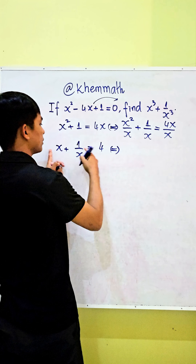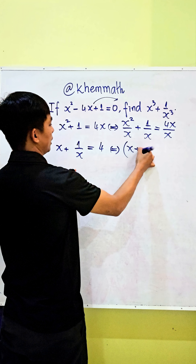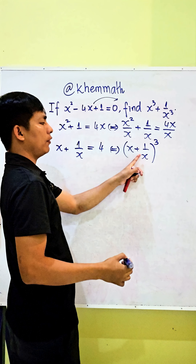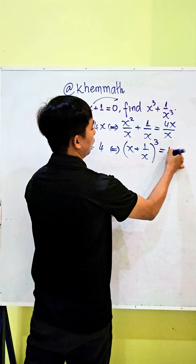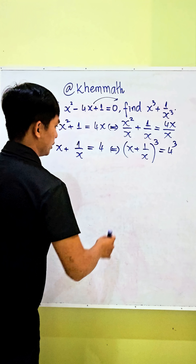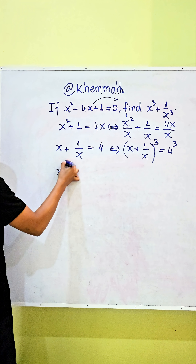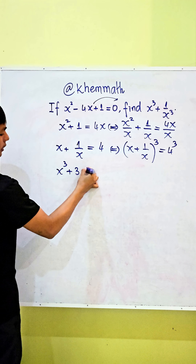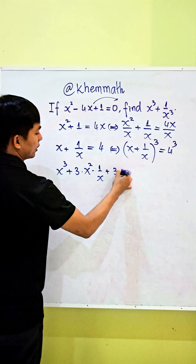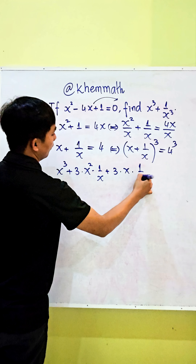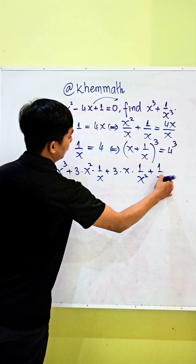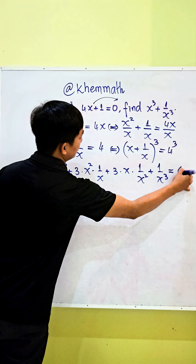And we raise both sides of this equation to the power of 3. We get (x plus 1 divided by x) to the power 3 equals 4 cubed. And here we expand it: we get x cubed plus 3 times x squared times 1 divided by x, plus 3 times x times 1 divided by x squared, plus 1 divided by x cubed equals 64.